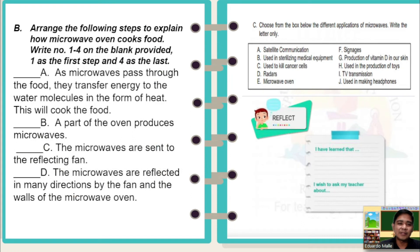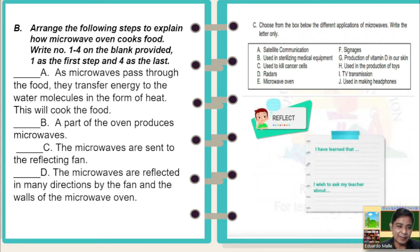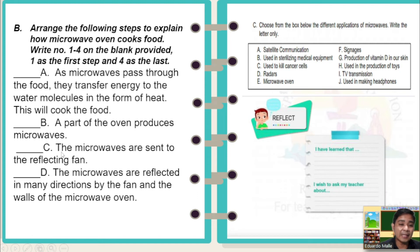Arrange the following steps to explain how a microwave oven cooks food. Write numbers one to four on the blank provided — one as the first step and four as the last. Letter A: as microwaves pass through the food, they transfer energy to the water molecules in the form of heat — this will cook the food. Letter B: a part of the oven produces microwaves. Put your answers one to four based on your understanding of the proper arrangement.